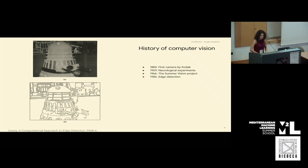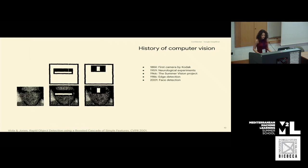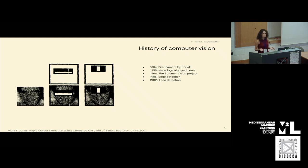There are some computer vision algorithms developed in the meantime. For example, in 1986, there is a very cool edge detection algorithm proposed by Canny. By edge, I mean in images where the brightness changes sharply — that's what we call edges. Canny's algorithm works with high accuracy, is fast, and is still used in some applications today. Another thing is face detection. A prominent work done by Viola and Jones in 2001 is one of the significant works in the area, though it works at lower accuracy compared to today's deep learning-based approaches and had far fewer parameters.